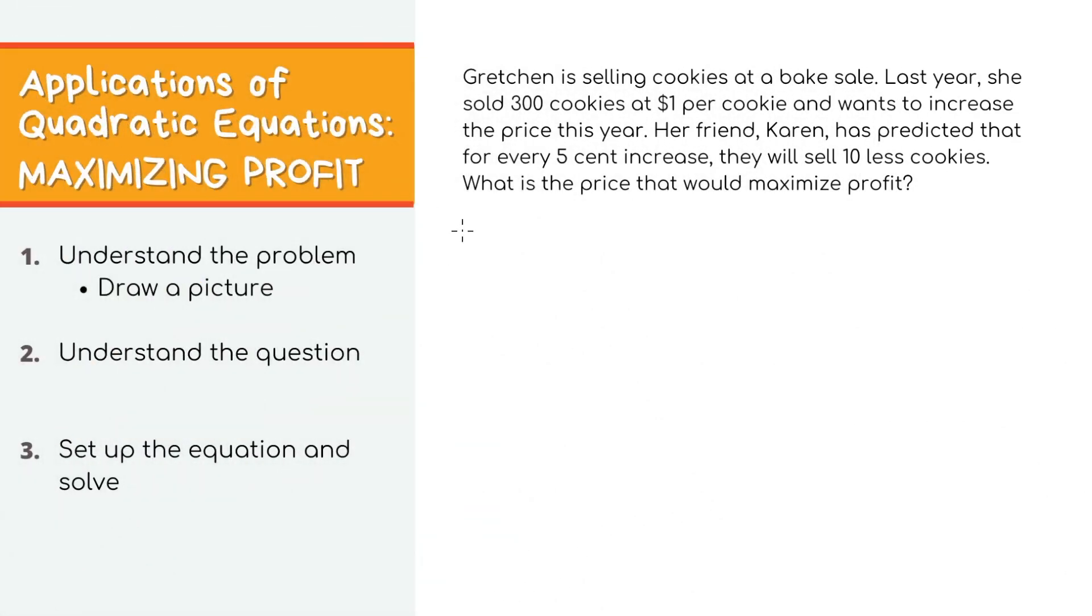Our last type of questions is about maximizing profits. Usually people are selling gym memberships or car washes or whatever, and they're trying to price it so that they get the most profit. Which I mean, who doesn't want to maximize profit? Here we have Gretchen who's selling cookies at a bake sale. She was pretty good last year because she sold 300 cookies for $1 each, but she's getting a little greedier this year and she wants to charge more. Apparently, her friend Karen ran the numbers and somehow determined that for every 5 cent increase, she would sell 10 less cookies. Now the question is, what price should she sell her cookies to make the most money? Obviously, you can't price it too high because no one will buy $10 cookies. But if you price it too low, you'll just make the same amount of money you made last year.